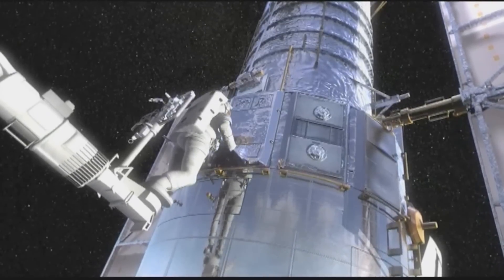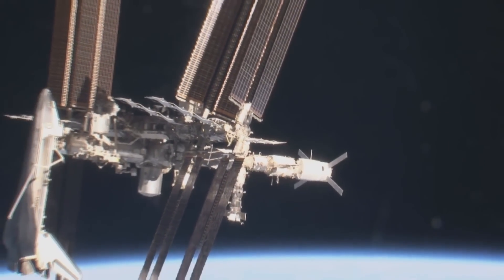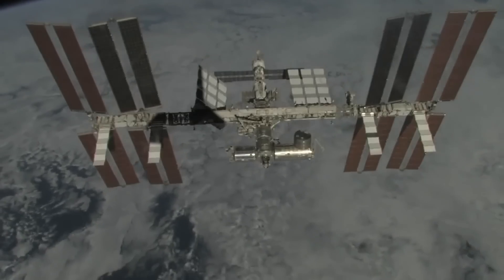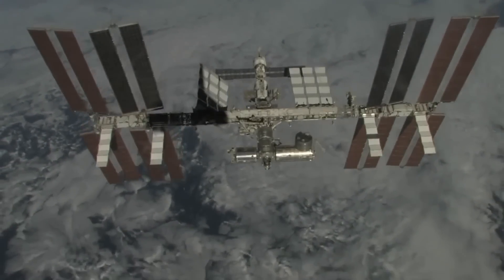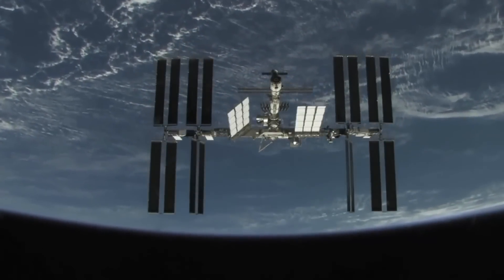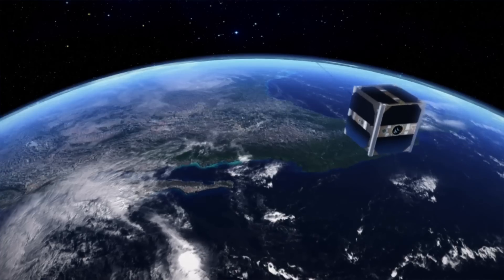The International Space Station has to frequently maneuver to avoid some 12,000 larger pieces of debris that are constantly monitored. These larger pieces of debris measure at least 10 centimeters wide, just like SwissCube.